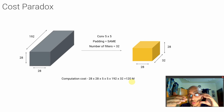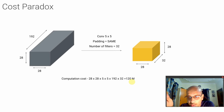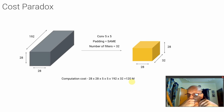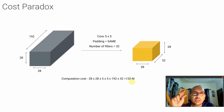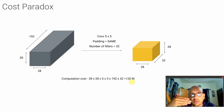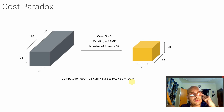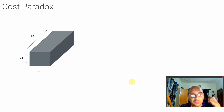We first reduce the number of channels by doing a 1 by 1 convolution, and then with the reduced volume apply the same 5 by 5 filter and get the same output. Why apply the 5 by 5 convolution on such a big volume when you can reduce it first using 1 by 1 convolution? 1 by 1 convolutions are typically used to reduce the volume. Height and width can be reduced in a neural network by doing max pooling, but that does not help reduce the number of channels. So 1 by 1 convolution is where you can actually reduce the number of channels.